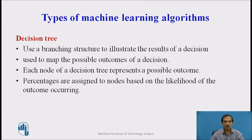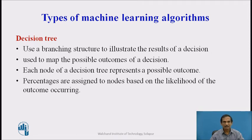Decision trees form the third type of machine learning algorithm. They use a branching structure to illustrate the results of decisions, mapping possible outcomes and the reasons for taking a particular decision. Each node of a decision tree represents a possible outcome that is justified and supported, and percentages are assigned to nodes based on the likelihood of each outcome occurring, at various levels until a particular goal is reached.